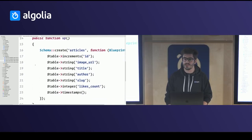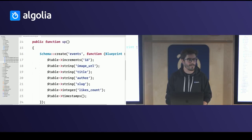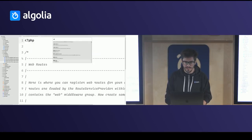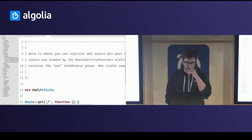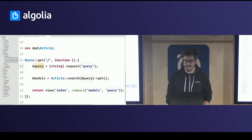On the article I have an ID, image, title, a slug, and a number of likes. The structure of events is the same. On the HTTP layer, it's also basic: I have a single route where I take the query, send it into Scout's search method, retrieve the models, and send the models to the view.